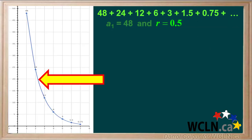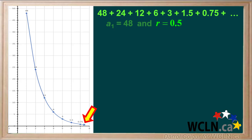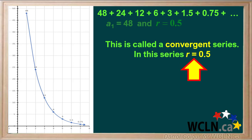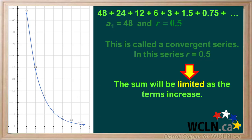Here's a graph of the first seven terms of this series. We'll add an arrow to the curve to project how this series will behave as we keep on adding terms. We see that the value of the terms keeps on decreasing as we add terms and approaches zero. This is called a convergent series. In this series, R equals 0.5. In calculating the sum of a convergent series like this, the amount that we add for the value of each term will keep getting smaller and smaller.